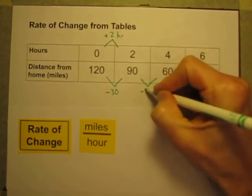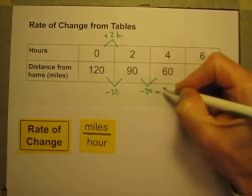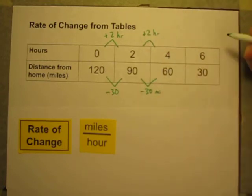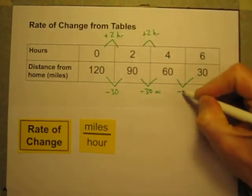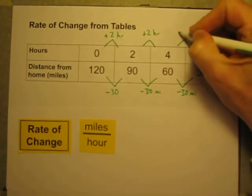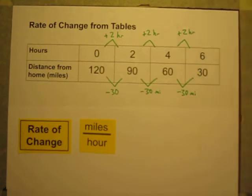Same thing here, I'm decreasing by 30 miles when I increase by 2 hours. I decrease my distance by 30 miles when I increase the time by 2 hours.